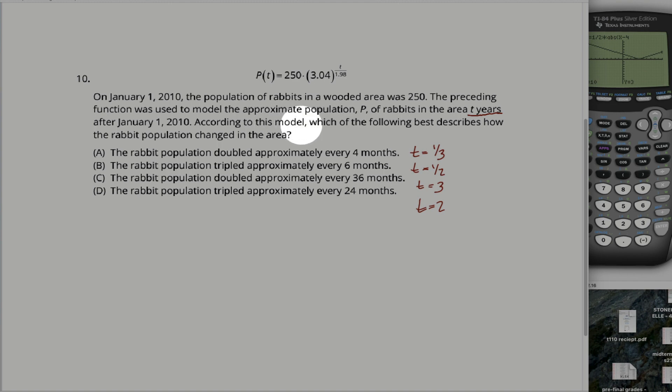Anyways, what the question asks is, according to this model, which of the following best describes how the rabbit population changed in the area? So the fact that it's talking about changing kind of implies we want to know what the initial population is. In other words, how many rabbits are there at time zero? You got a calculator, so you could just plug in numbers, but really you don't need to.